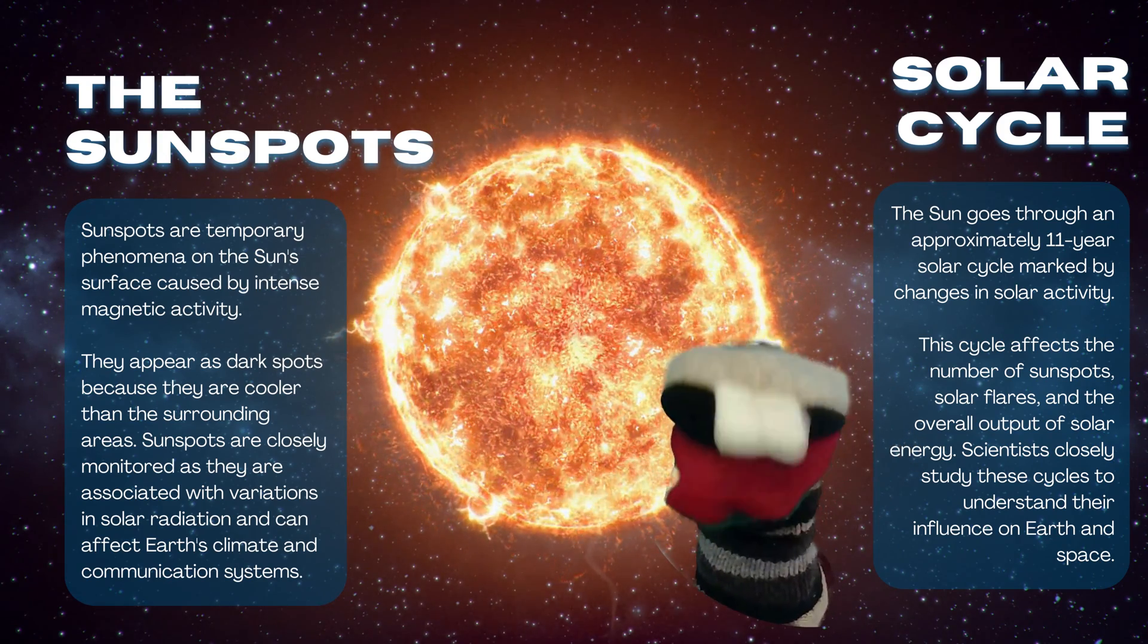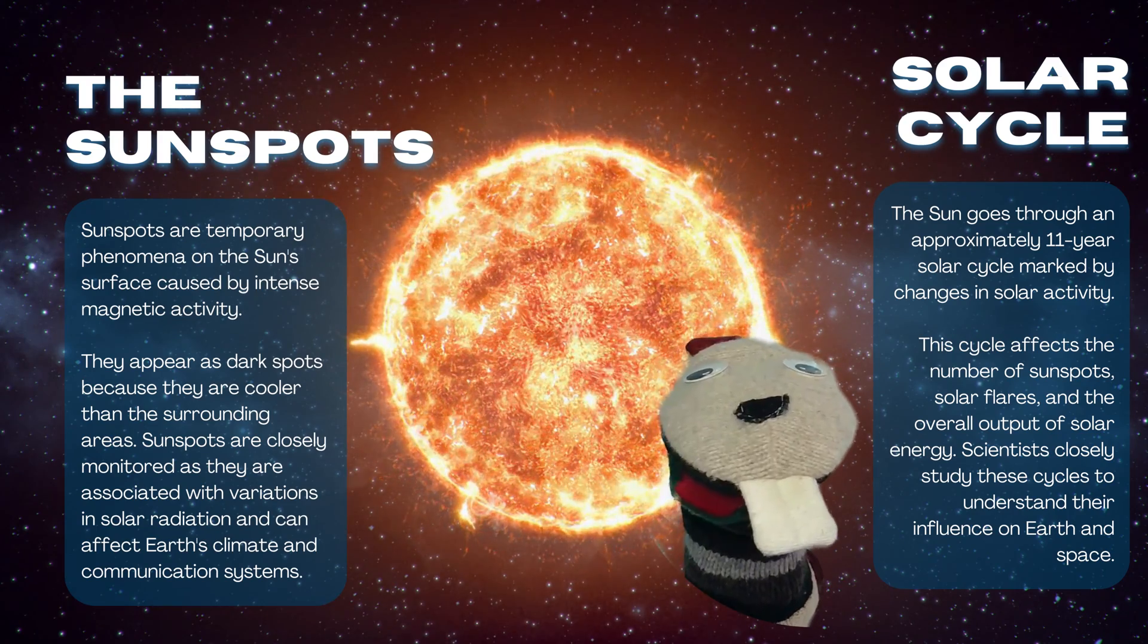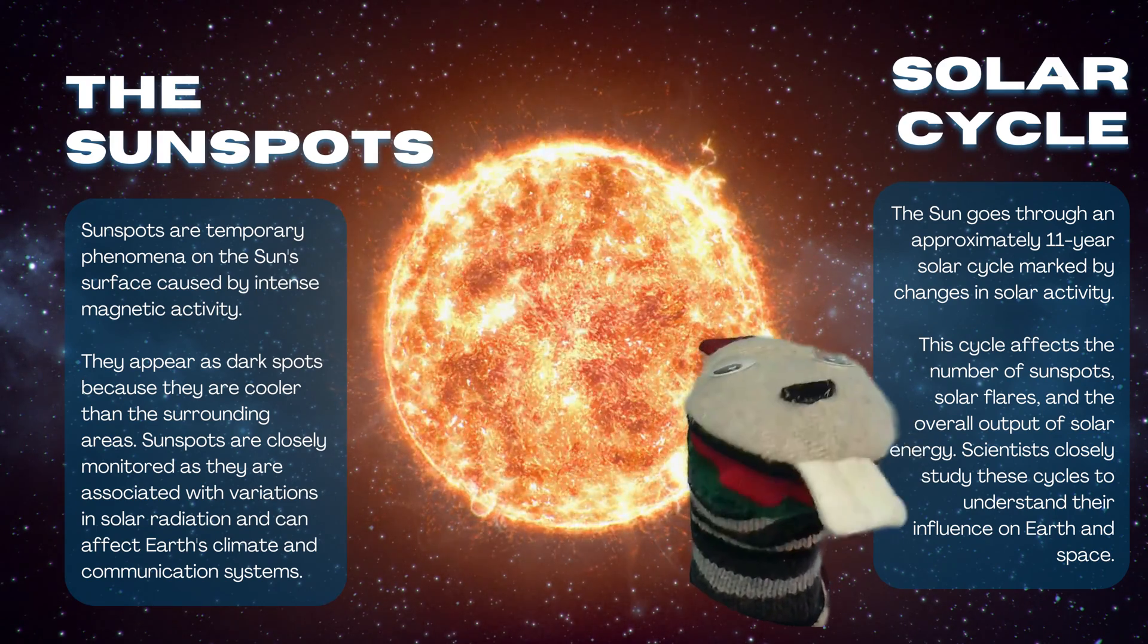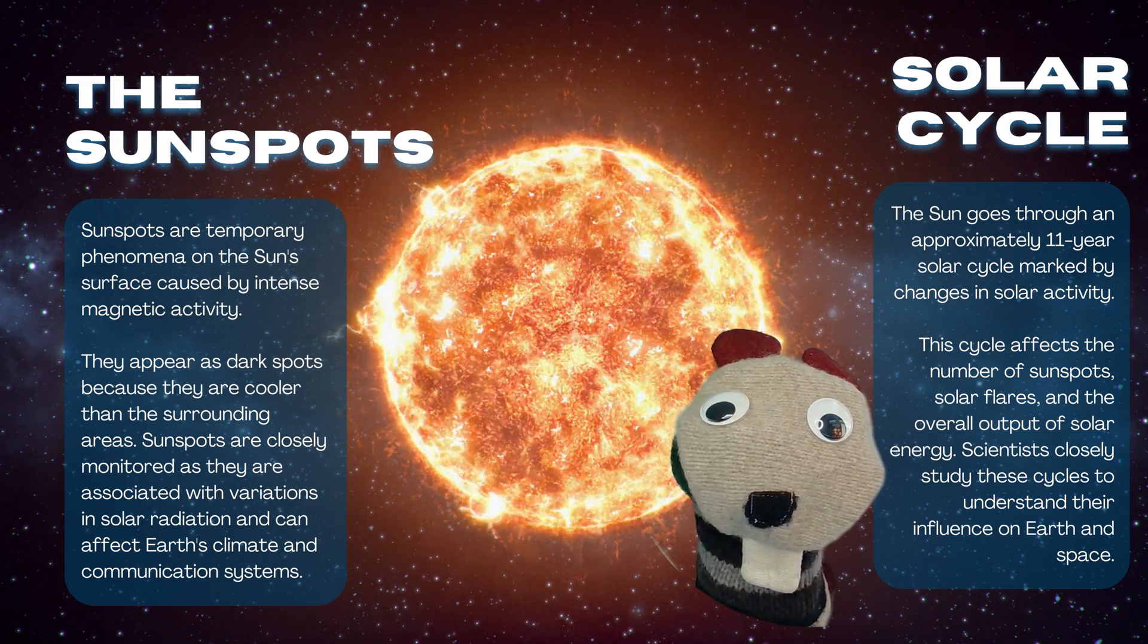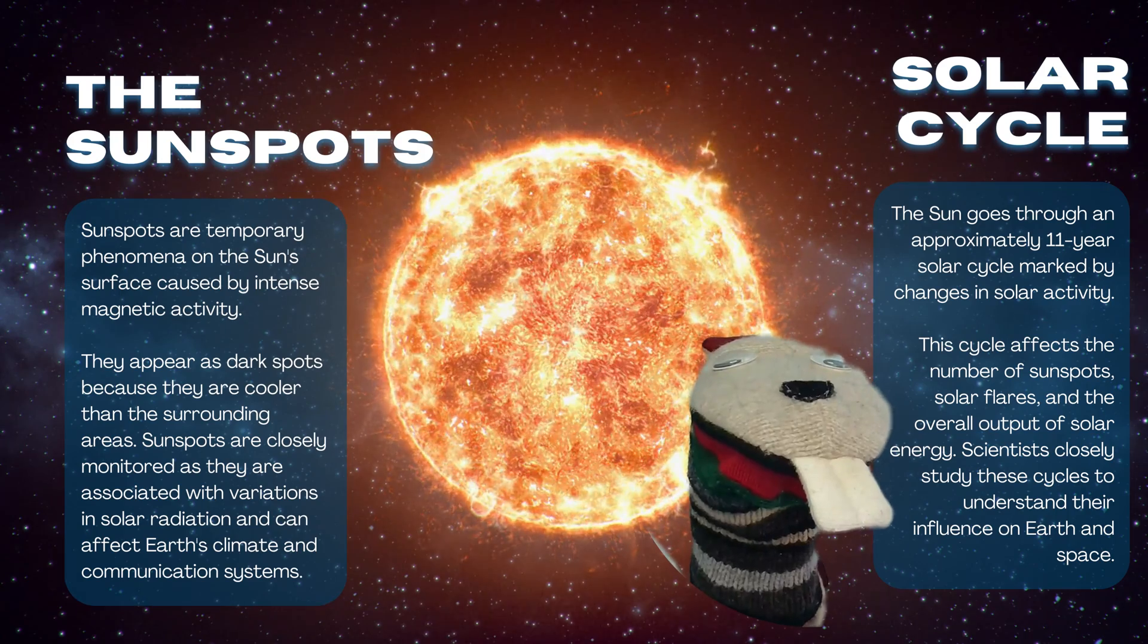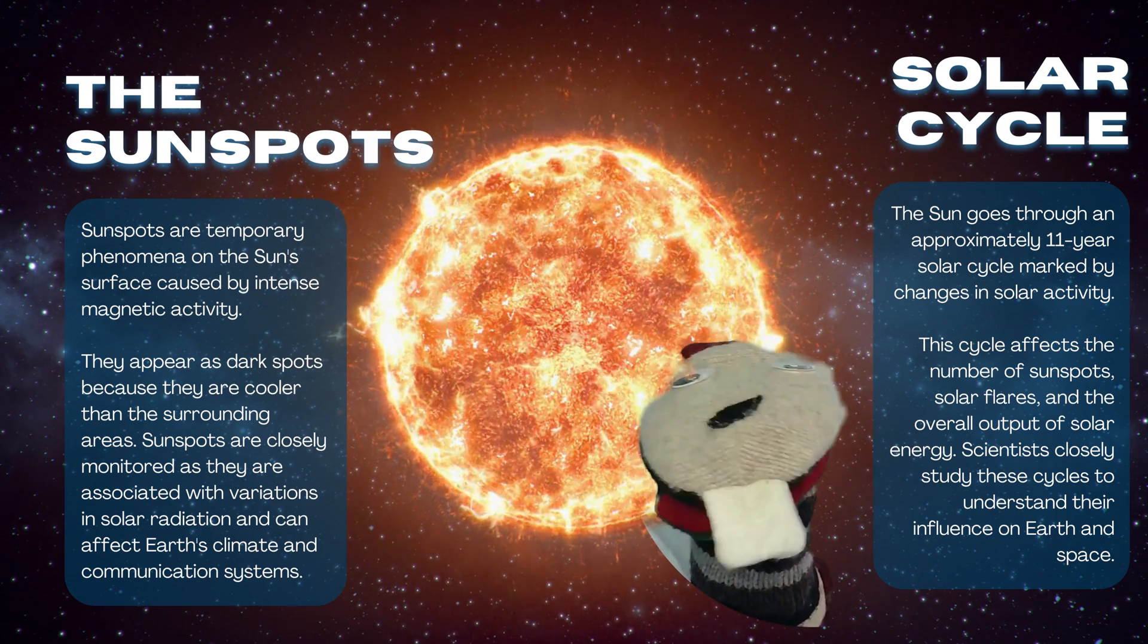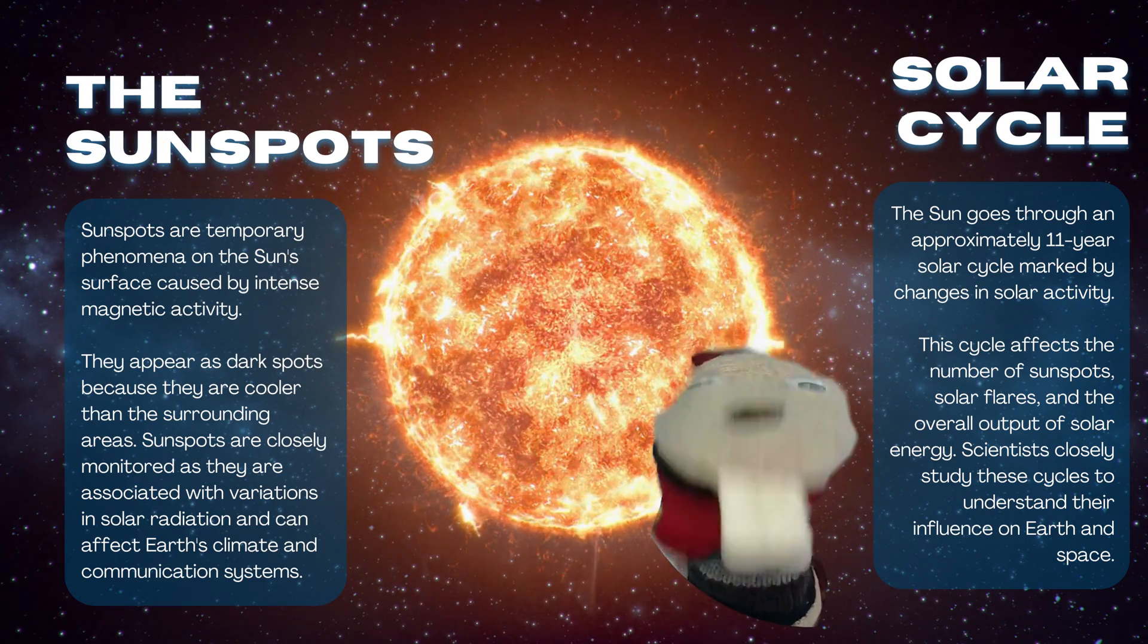So the sun goes through approximately an 11-year solar cycle marked by changes in solar activity. The cycle affects the number of sunspots, solar flares, and the overall output of solar energy.